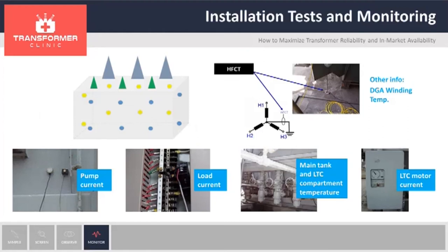That was the explanation for screening testing. If we go with the next two steps — diagnostic testing and online monitoring — this is the typical setup. We have sensors on the transformer on the four walls of the unit, installed in service. We have magnetic temperature sensors, clamp-on CTs for load current, tap-changer current, pump current, and we also add a high-frequency CT connected either to the tank ground or the neutral ground connection. All this installation is done in approximately four to six hours, so it's a very fast installation process.